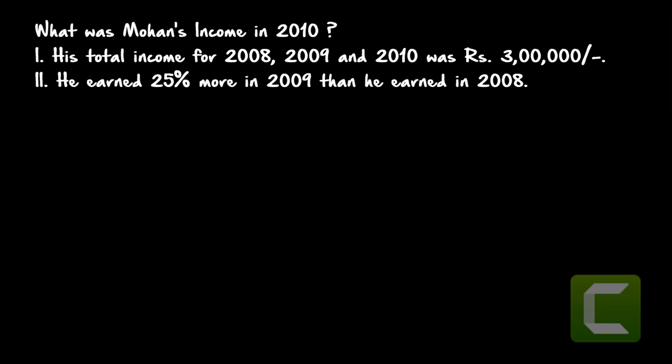Here, the question is to find Mohan's income in 2010. From statement one, his total income for 2008, 2009, and 2010 is 3 lakh rupees, written as x + y + z = 3 lakh, where x is income for 2008, y is income for 2009, and z is income for 2010. We need to find z.